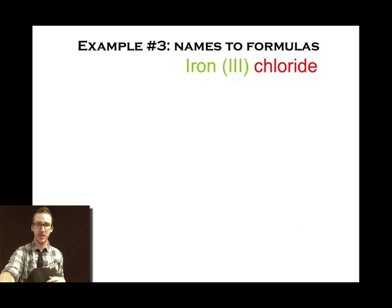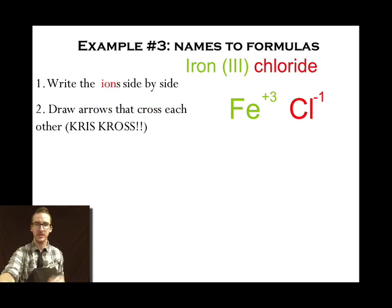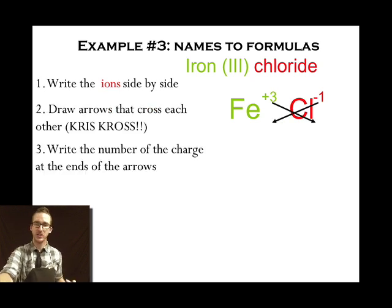Let's take a look now at an example that uses a transition metal. Iron, Roman numeral three, chloride. We're gonna write the ions side by side. I don't have to look at my periodic table here. In the name, it tells me that the charge of the iron ion is positive three. Chloride is gonna be one minus. Next step, crisscross those charges. Again, we're gonna write just the numerical value. We're not gonna include the plus or minus sign. That's gonna indicate the number of each of those ions I have.